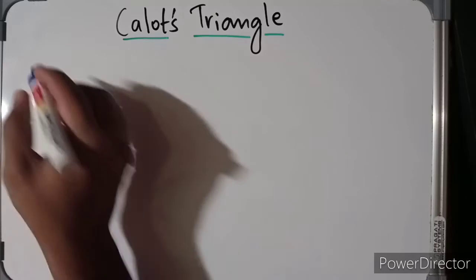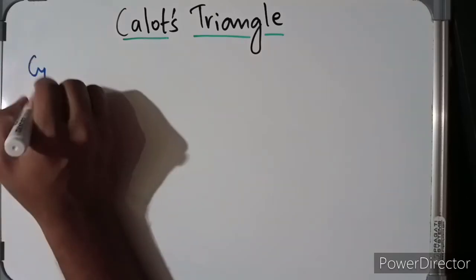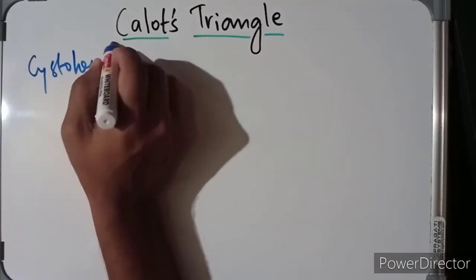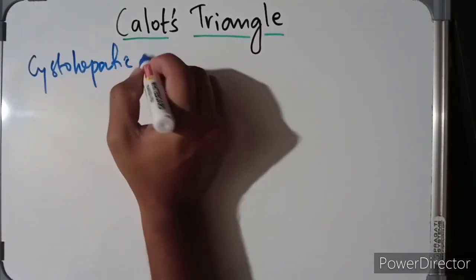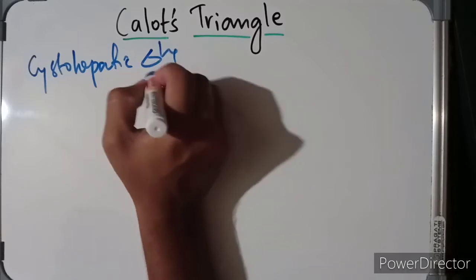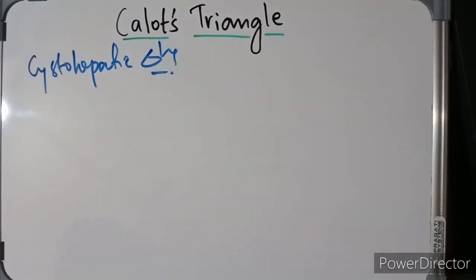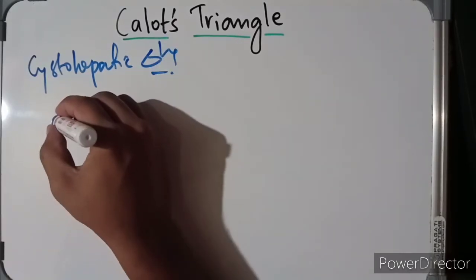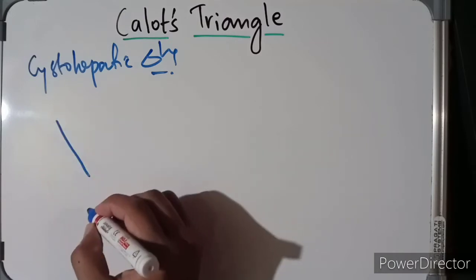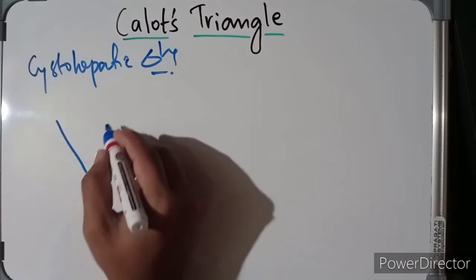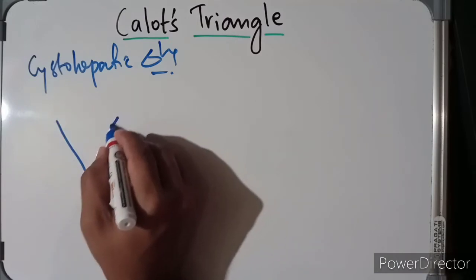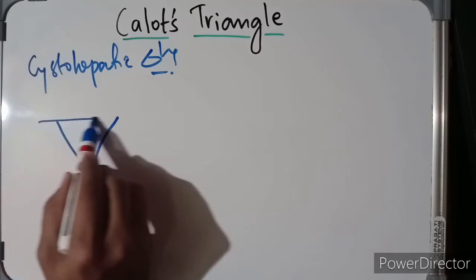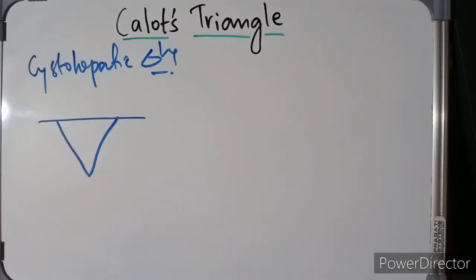Coming to the cystohepatic triangle, it is bounded on the right side by the cystic duct, on the left side by the common hepatic duct, and the base is formed by the inferior surface of the liver.